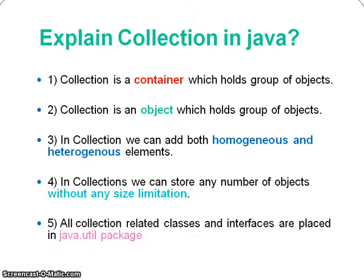So what is a collection? A collection is nothing but a container which holds a group of objects. Taking the dictionary meaning as well, a collection is a group or a set. Collection itself is an object which holds a group of other objects, and all the objects are placed in a container which is referenced by another object.